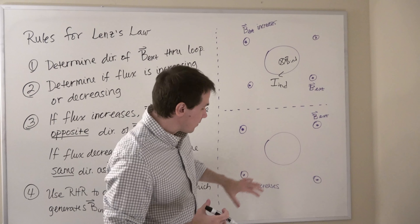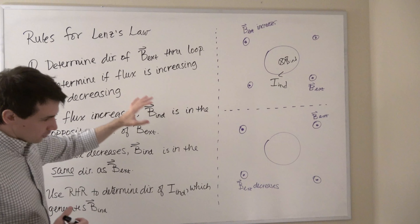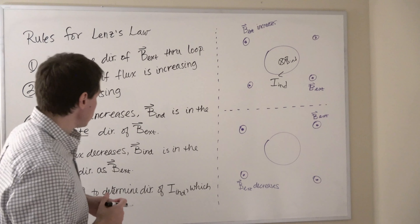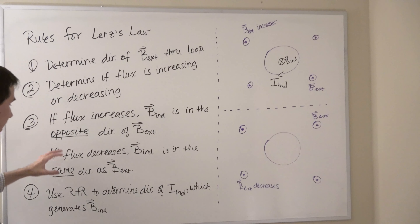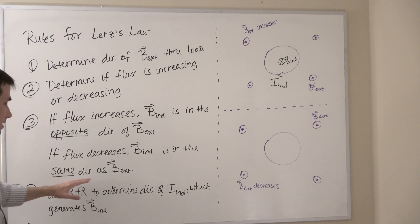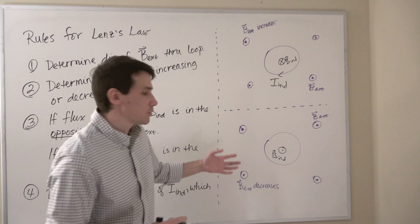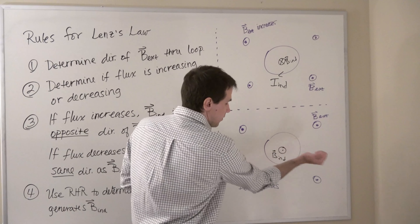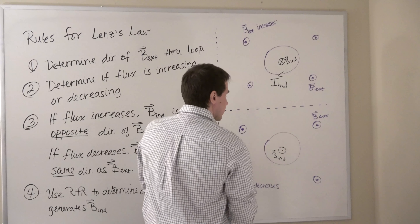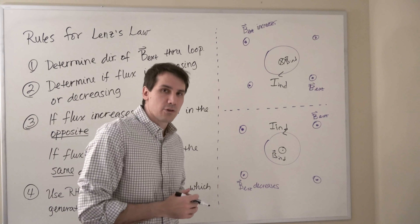For the bottom picture, the external magnetic field is decreasing out of the board. Step one: external B is out of the page. Step two: flux is decreasing because the magnetic field is decreasing. Step three: decreasing flux means the induced magnetic field points in the same direction as the external field — so induced B points out of the board. Step four: thumb points out of the board, fingers curl counterclockwise, giving us an induced current flowing counterclockwise through the loop.